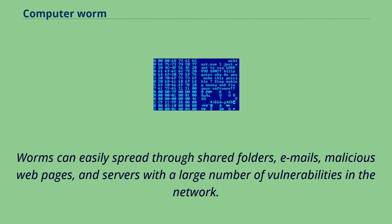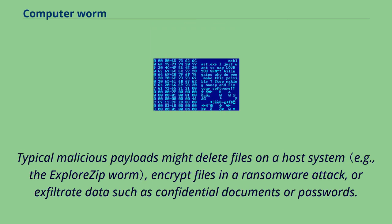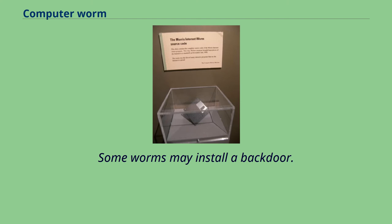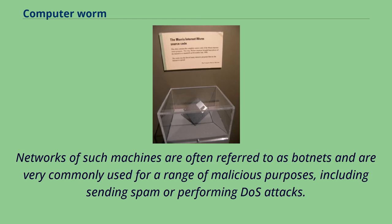Any code designed to do more than spread the worm is typically referred to as the payload. Typical malicious payloads might delete files on a host system, encrypt files in a ransomware attack, or exfiltrate data such as confidential documents or passwords. Some worms may install a backdoor, allowing the computer to be remotely controlled by the worm author as a zombie. Networks of such machines are often referred to as botnets and are very commonly used for malicious purposes, including sending spam or performing DOS attacks.